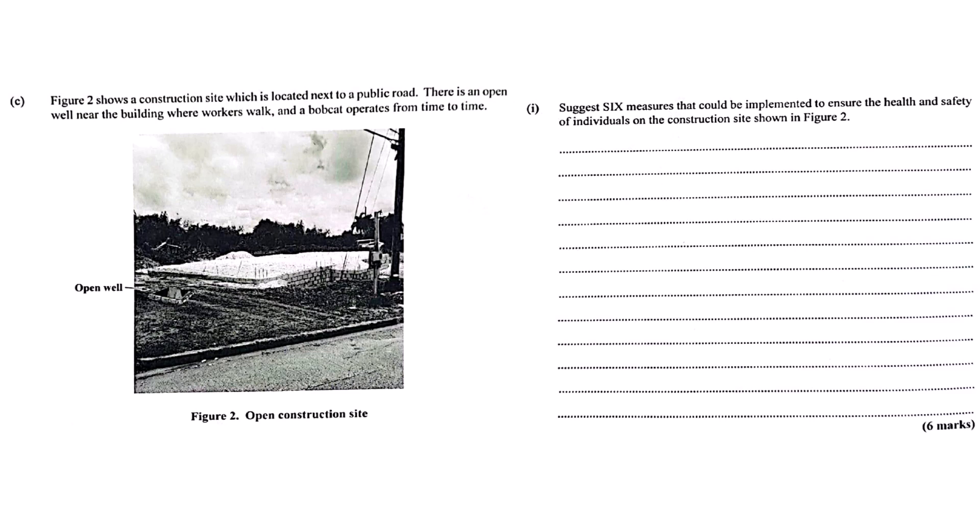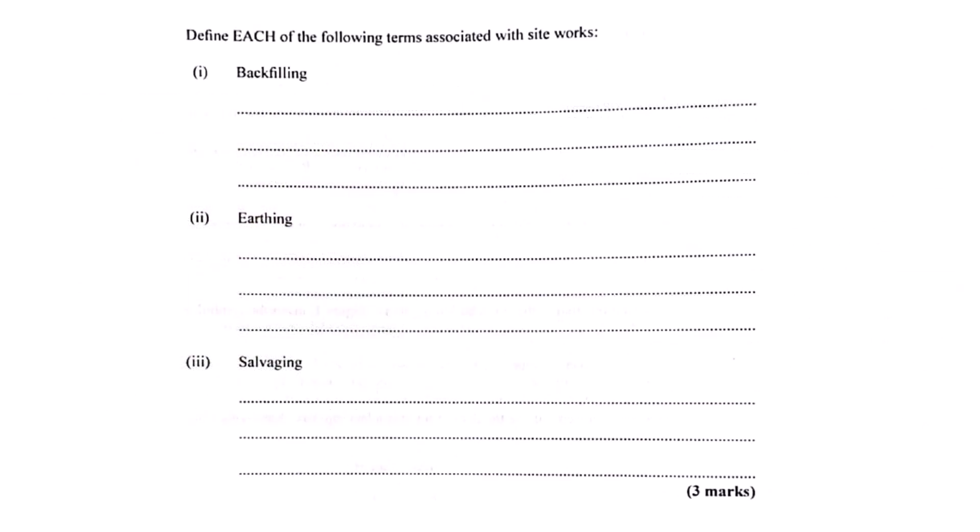Okay. Now, we've used some specific terms here. Our source defines three key ones from site work. First, backfilling. Right. That's just putting soil back into a hole you dug, usually after you've put something in it, like a pipe or around a foundation. Got it. Then earthing, that sounds electrical. It is. It's about safety. Creating a connection from electrical systems down into the ground. So if there's a fault, the electricity goes safely into the earth instead of through a person. Exactly. Prevents electric shock. Crucial safety measure. And the third one, salvaging. That's basically recovering useful stuff from demolition or site clearing. Wood, metal, maybe bricks. So you can reuse or recycle them? Exactly. Less waste, maybe save some money on new materials. It's becoming much more common. Which is good. It helps to know the lingo. Definitely. Clear communication relies on everyone understanding these basic terms.